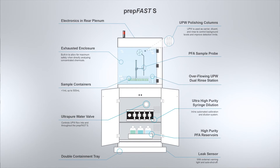Next, every flow path within the PrepFast-S is made from high-purity, chemically conditioned fluoropolymer. These include the sample probe, standard and acid reservoirs, valves, and transfer lines.